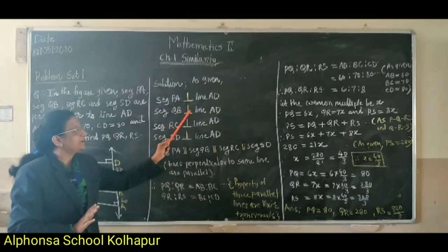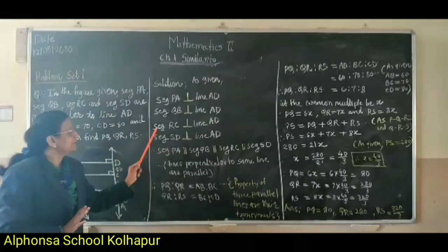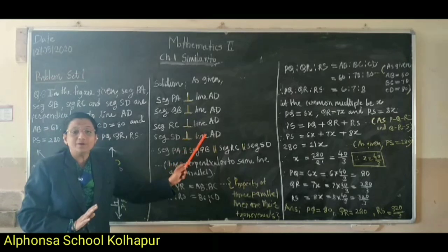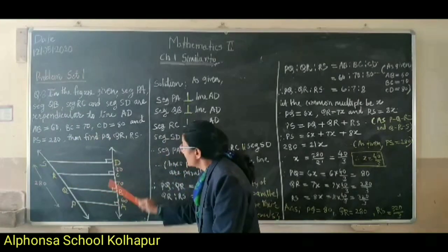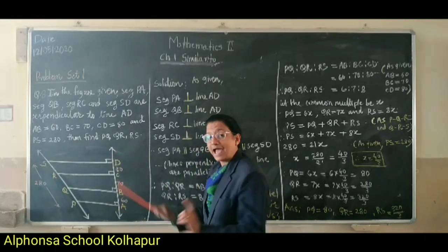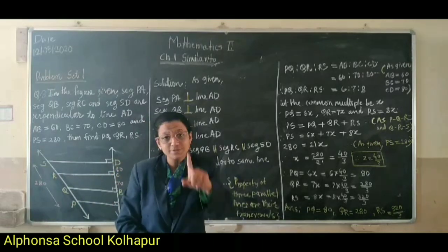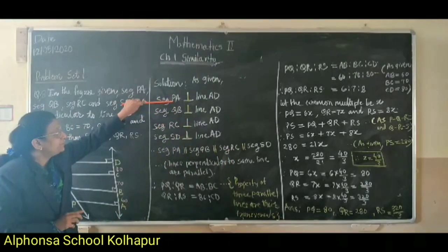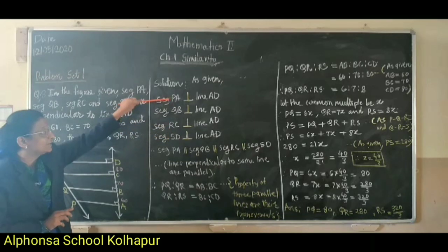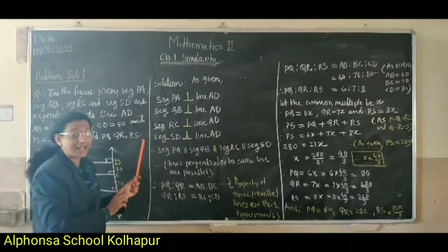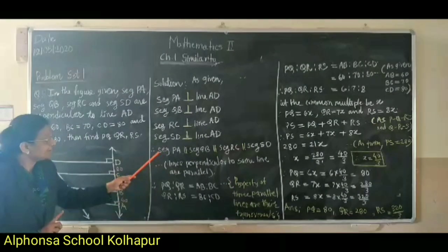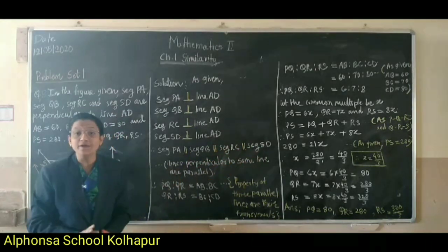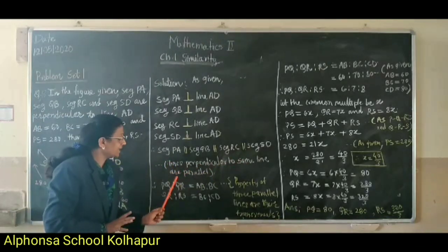As given, segment PA is perpendicular to line AD, segment QB is perpendicular to line AD, segment RC is also perpendicular to line AD, and segment SD is also perpendicular to line AD. All these segments are perpendicular to the same line AD. There is a property: if lines are perpendicular to the same line, then all those lines are parallel to each other. Therefore, seg PA is parallel to seg QB, which is parallel to seg RC, which is parallel to seg SD.